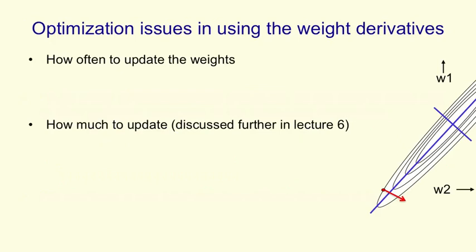So optimization issues are about how you use the weight derivatives. The first question is how often should you update the weights? We could try updating the weights after each training case, so you compute the error derivatives on a training case using backpropagation and then you make a small change to the weights. Obviously this is going to zigzag around because on each training case you'll get different error derivatives, but on average, if we make the weight changes small enough, it'll go in the right direction.